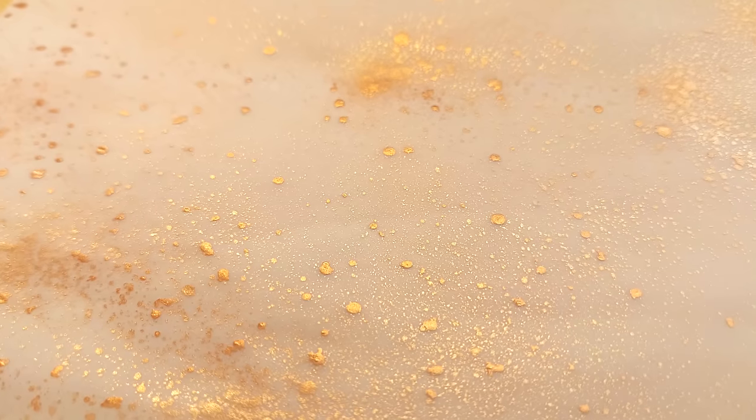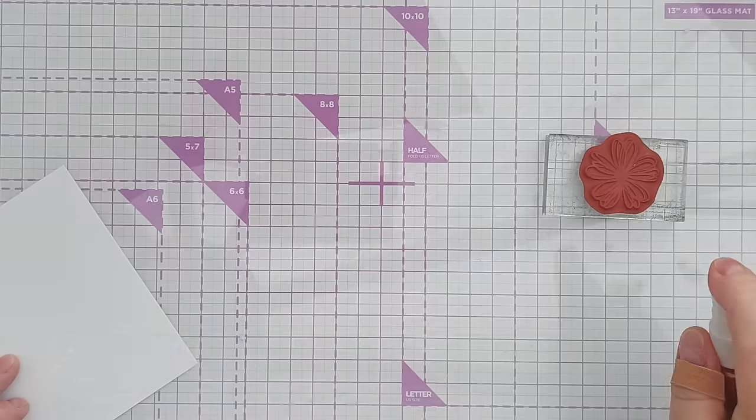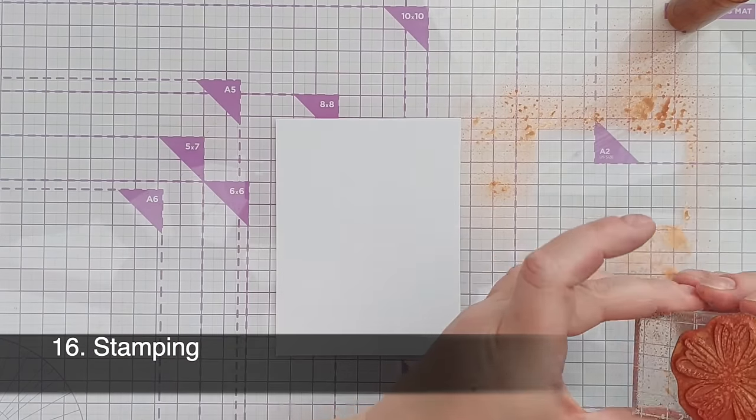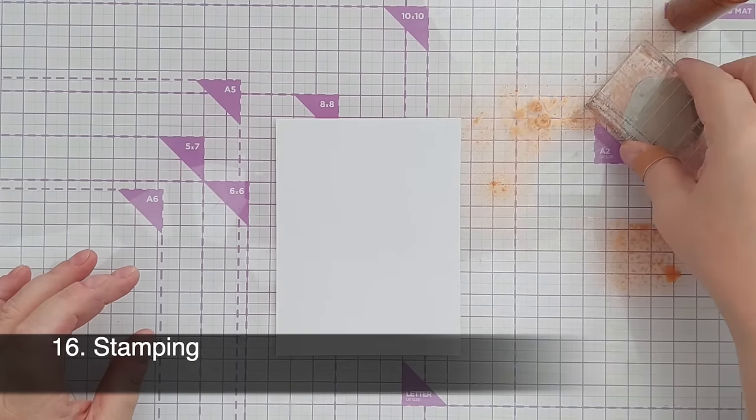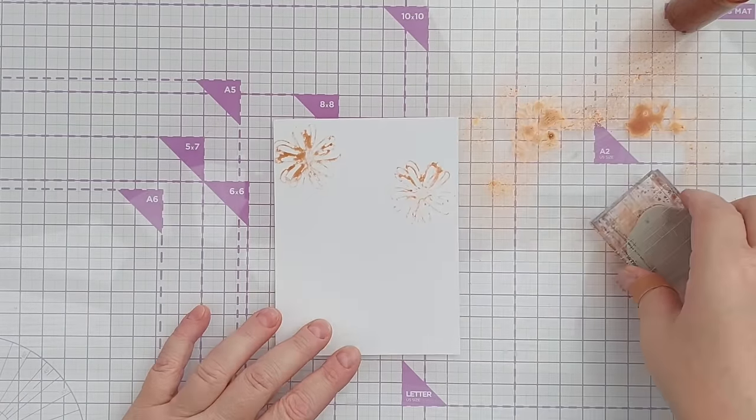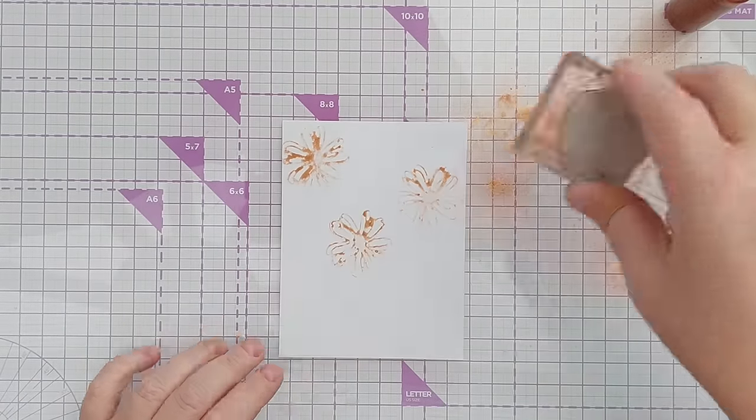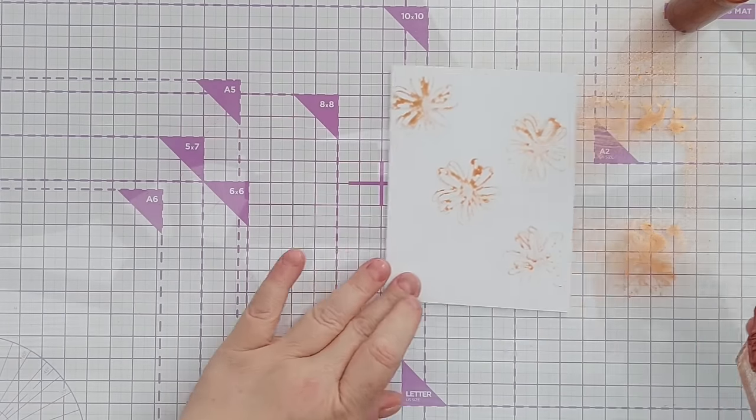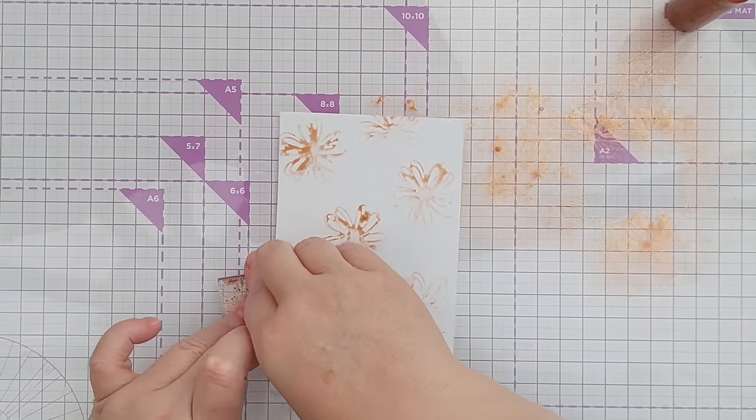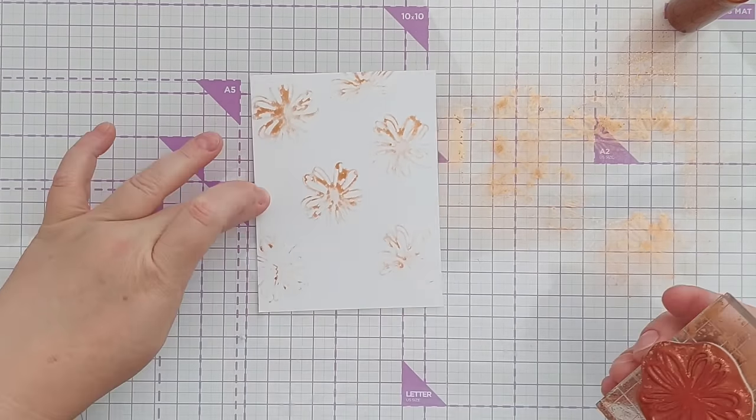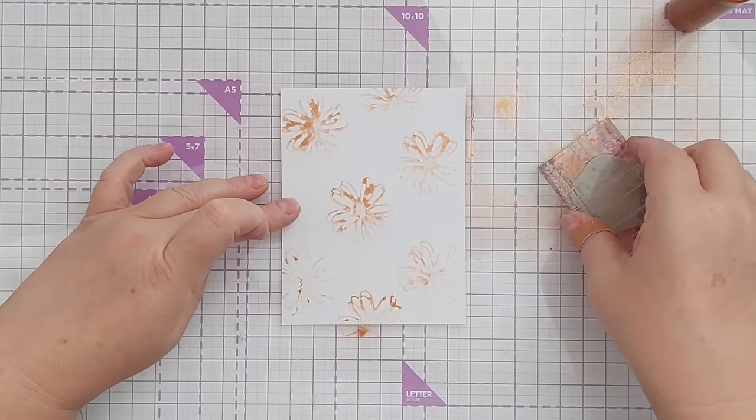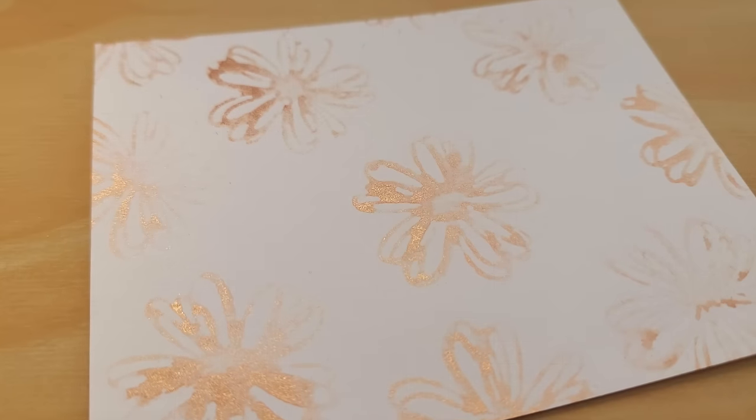And for our last technique, technique number sixteen, we've got stamping. I've got a rubber stamp here that I've stuck onto an acrylic block. I spritzed it with some shimmer spray and then picked up some more shimmer spray from my glass mat and then I stamped it onto a piece of mixed media paper. You don't get perfect impressions this way, you get very watercolory, blobby impressions, but it makes a really great background pattern with lots of shimmer and color and variation between each stamp.